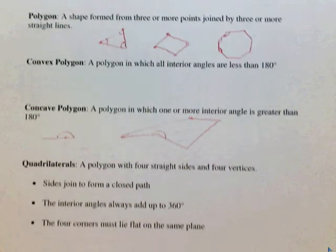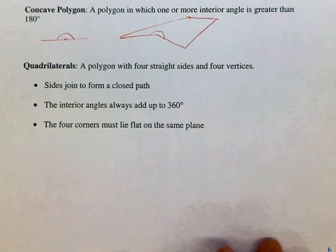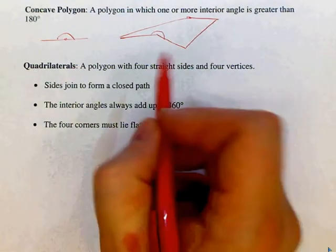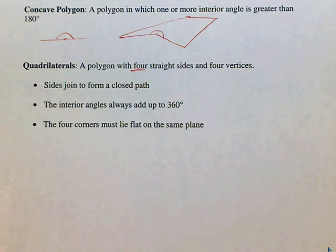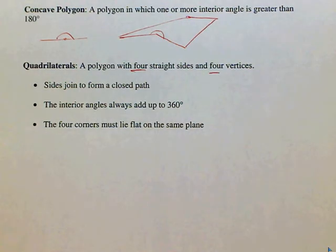Now let's look at a special type of polygon. A quadrilateral. A quadrilateral has four straight sides and four vertices. Quad means four. In order for this to be a quadrilateral, the sides are joined in a closed path, which means they are not open.